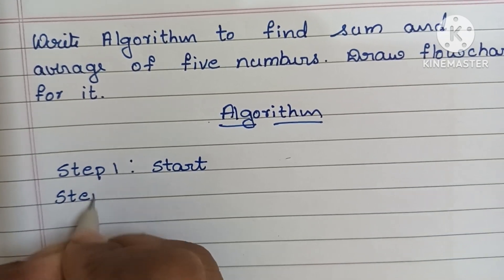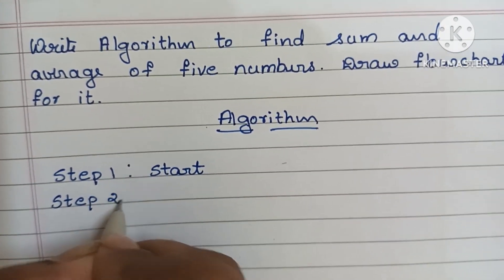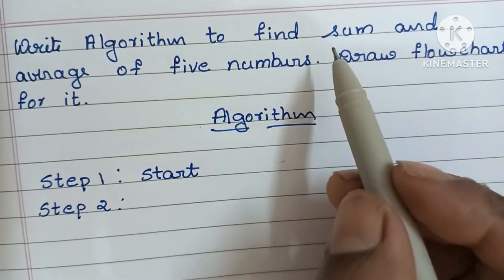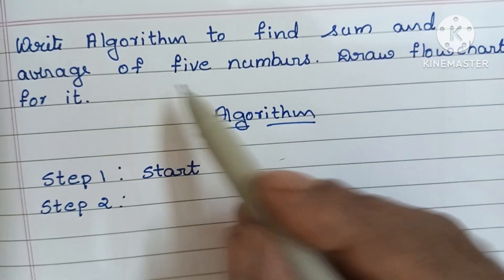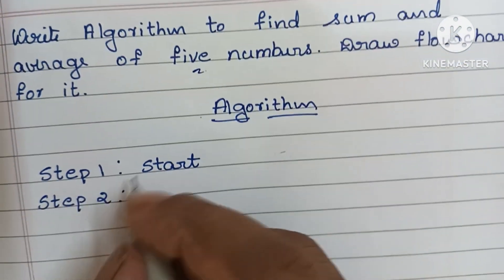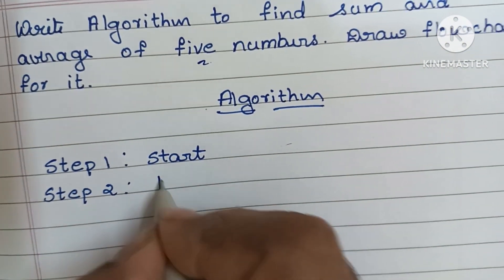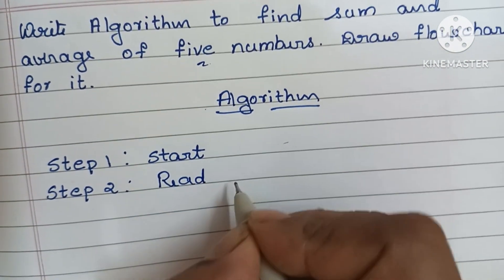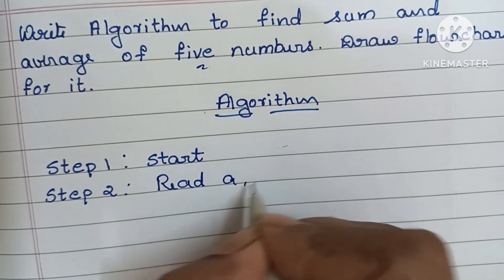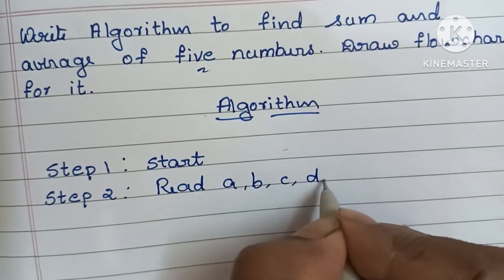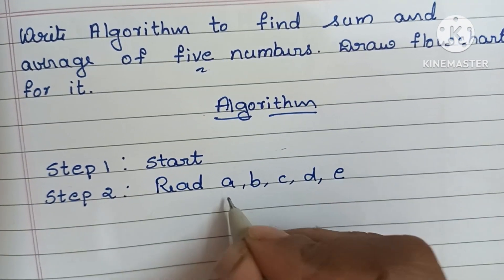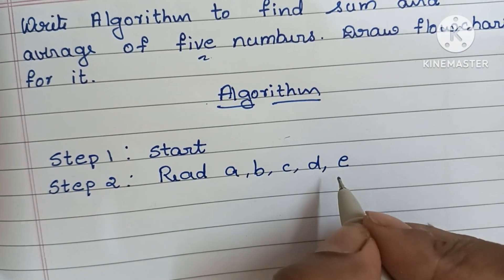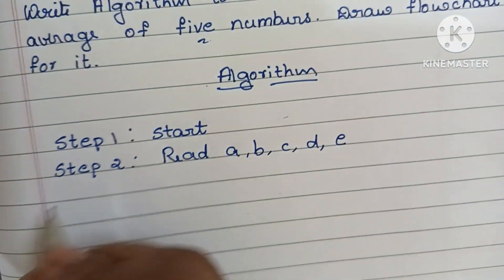Step two, we have to read the input values. Here we have to find sum and average of five numbers, so we have to read five numbers: read A, B, C, D, and E. Here A, B, C, D, E represent the five numbers.